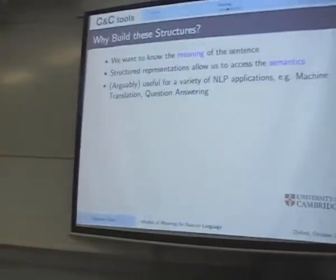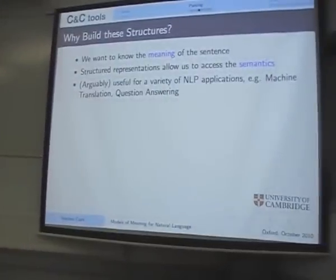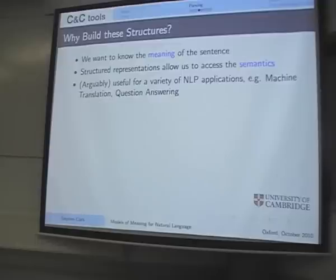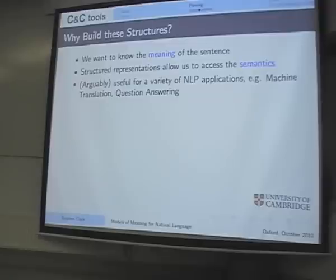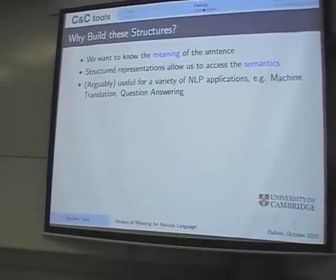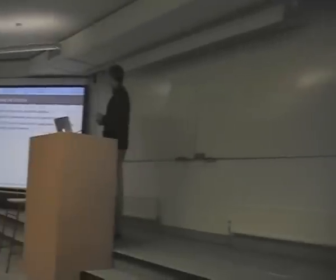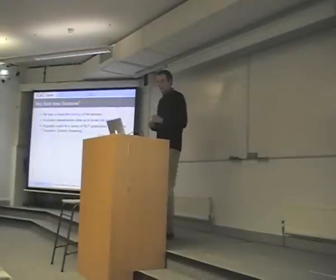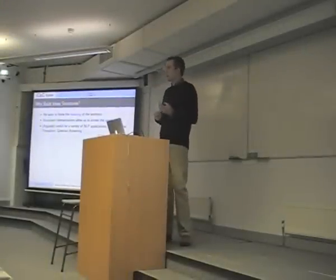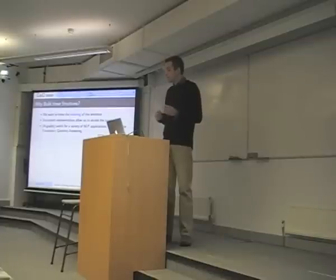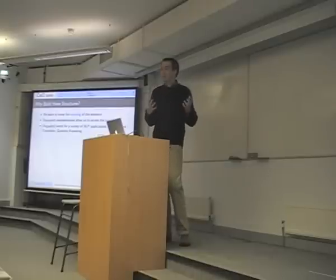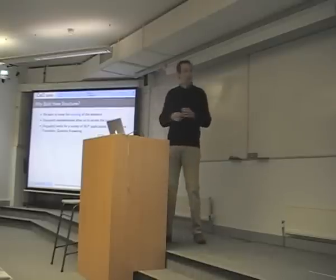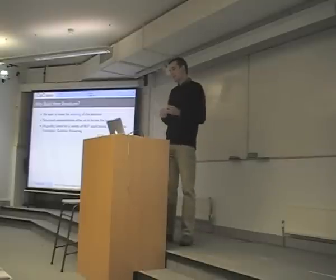Why build these structures? Because we want to get at the meaning of the sentence — these structured representations allow some access to that meaning, which is useful for applications like machine translation. Though despite 40 or 50 years of research in automatic parsing, it's still quite hard to find a compelling example where this parsing technology really helps. Google Translate, for instance, doesn't use any structured representation at all. But there's a belief in the community that eventually having a sophisticated representation of meaning will help with these tasks.